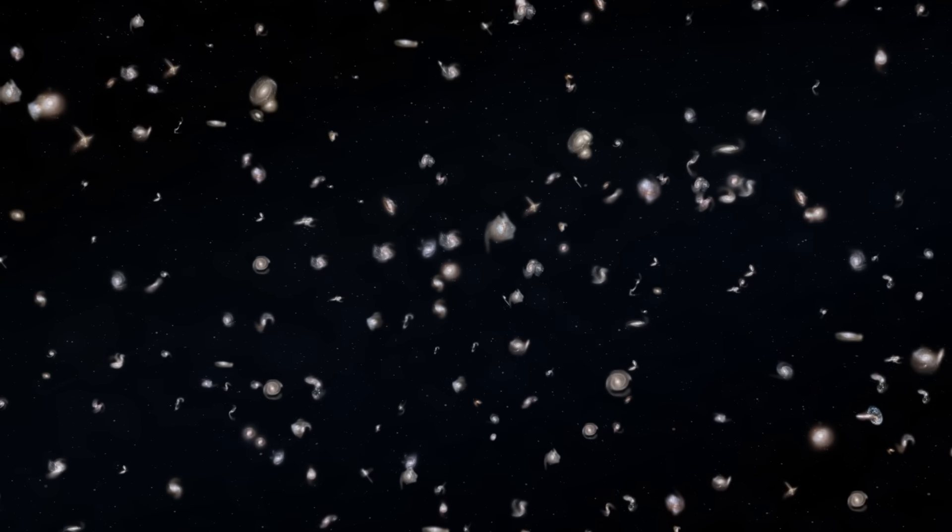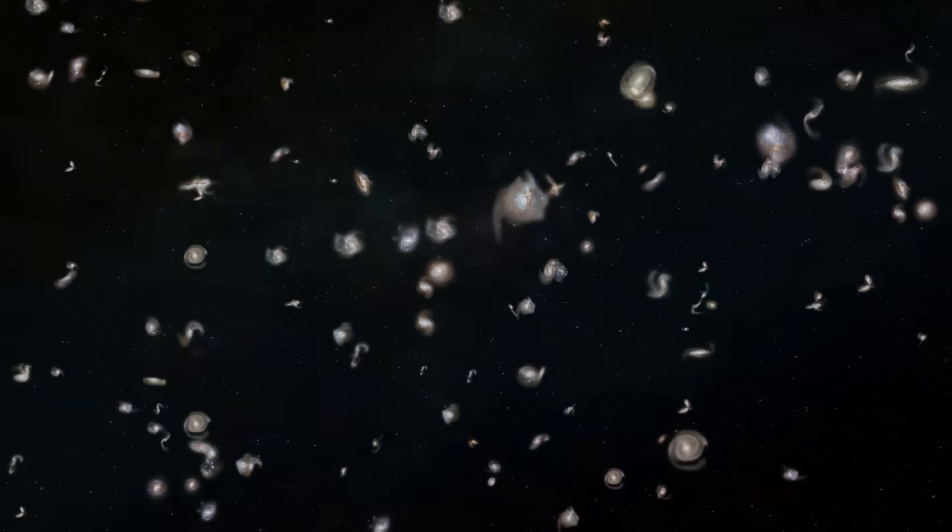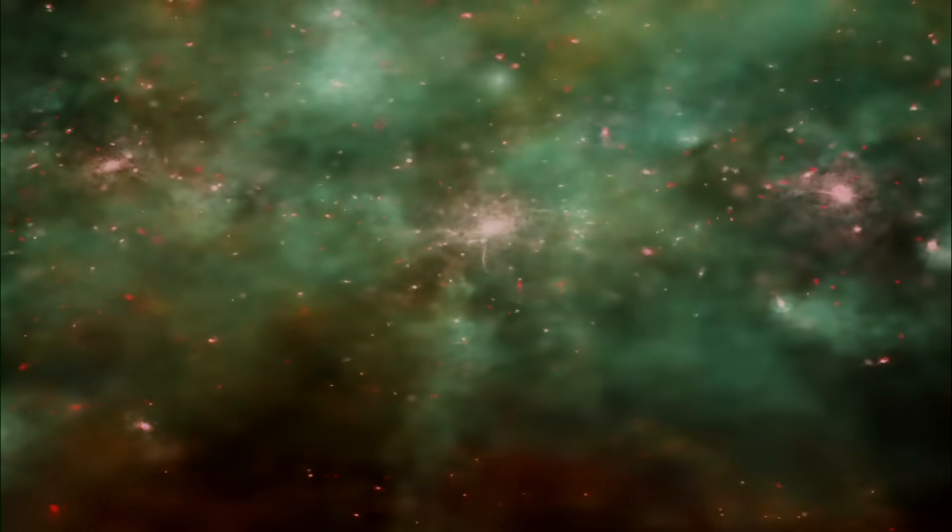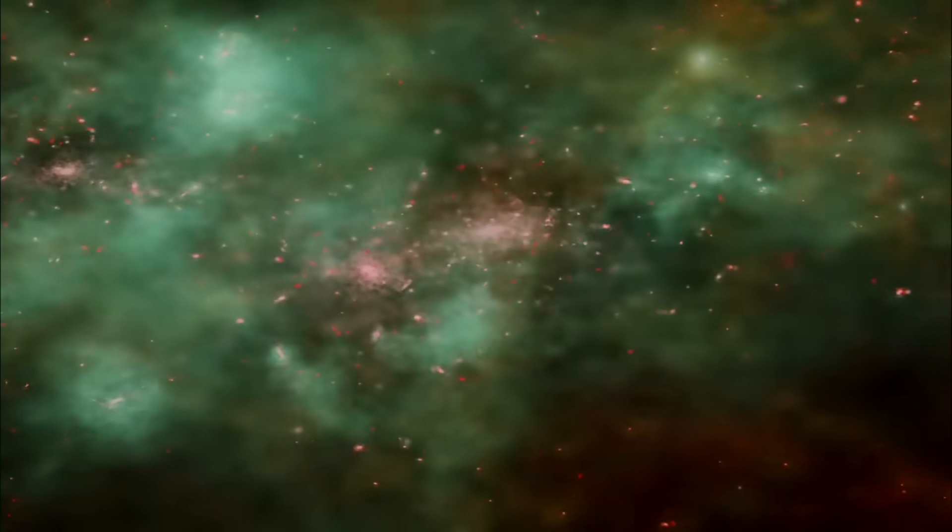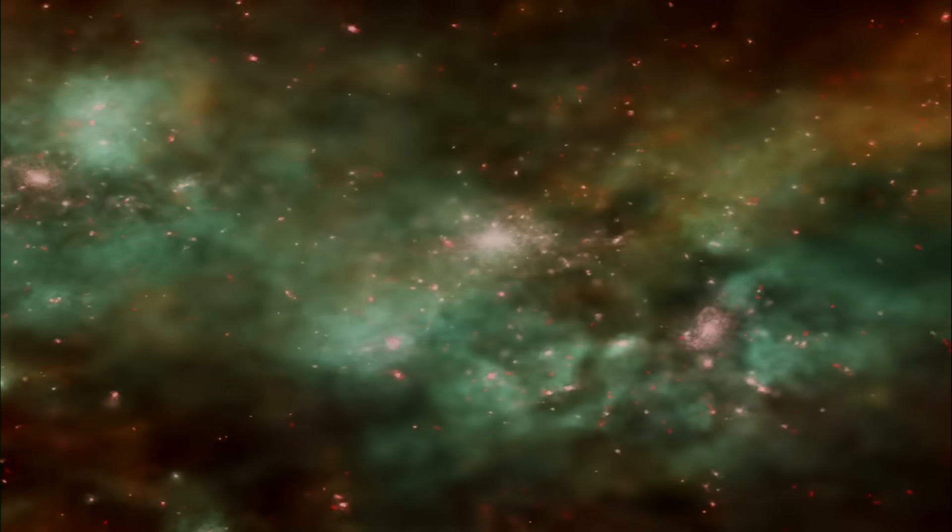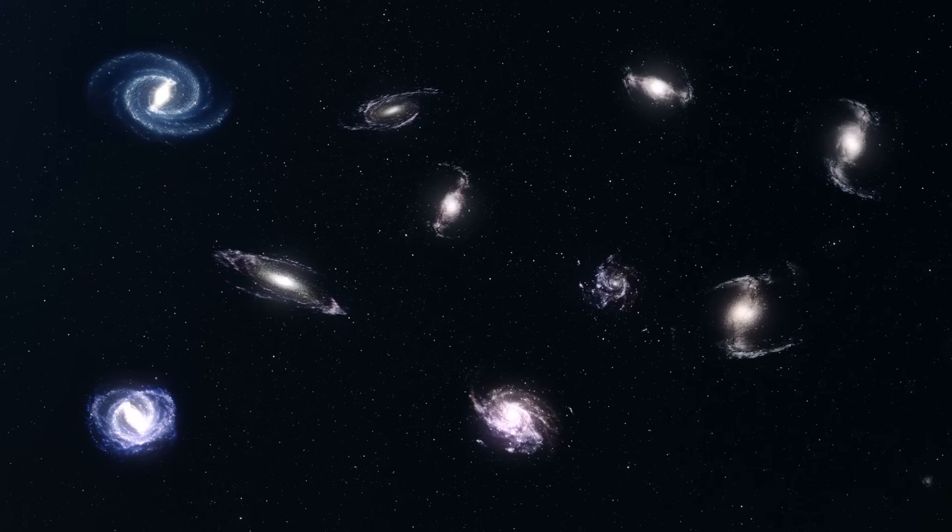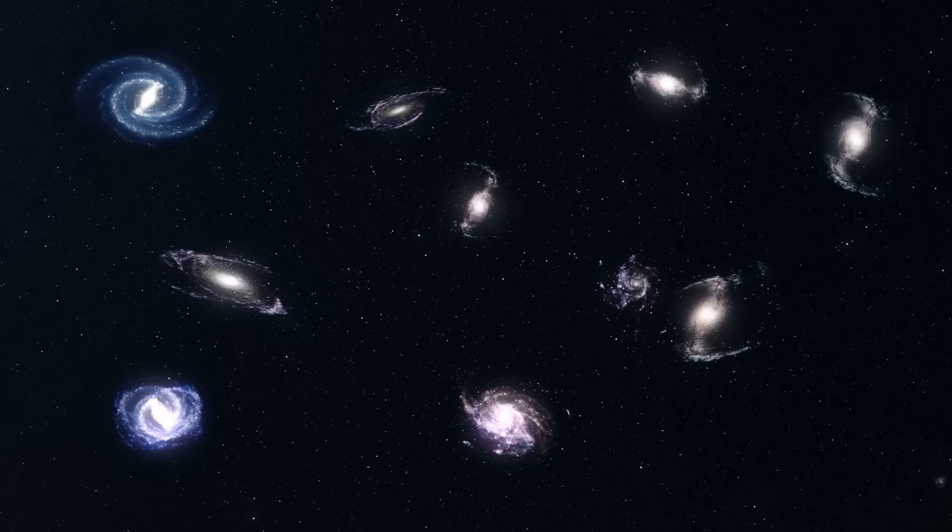But these superstructures do more than just move galaxies around. They also shape how galaxies and galaxy clusters evolve. Researchers have found that galaxy clusters within superstructures tend to host more galaxies than those outside. This points to the idea that superstructures create special environments, densely packed, rich in hot gas, that can influence how galaxies form, grow, and interact. To dig deeper, scientists are now using X-ray observations to compare galaxy groups inside these massive structures with those drifting in isolated regions of space. Their goal is to understand how the environment drives cosmic evolution.